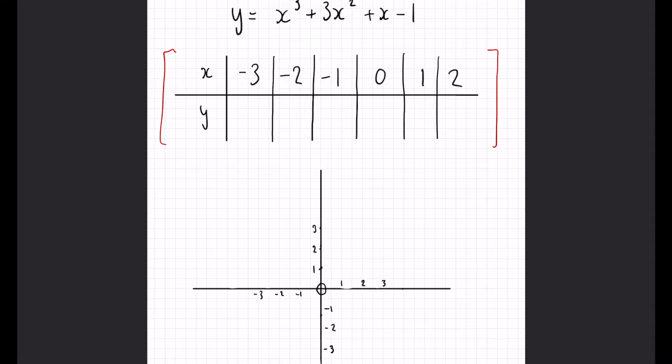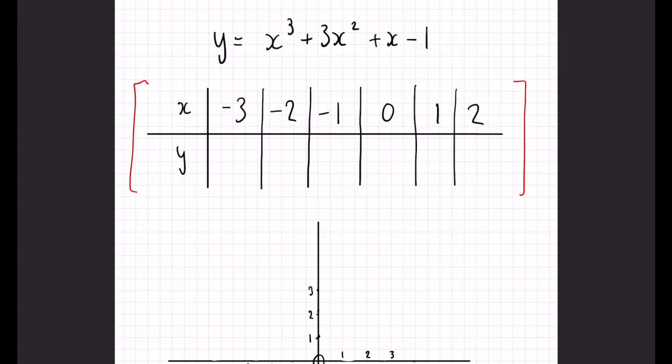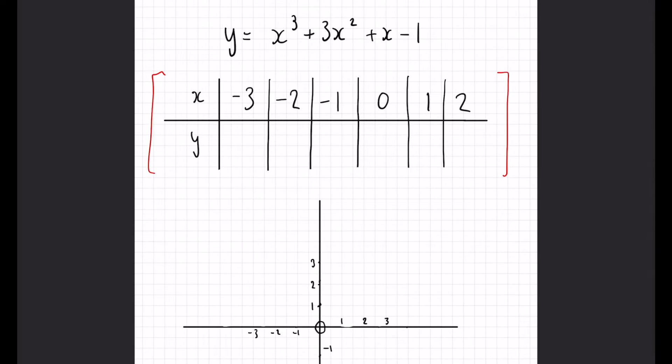So, let's start here. We need to plot the cubic graph, Y equals X cubed plus 3X squared plus X minus 1, between the values of minus 3 and 2. So, I always like to start at the positive end, because no one likes dealing with negatives. Positives are always going to be easier. So, if we take our 2, and we substitute it into all the X values that we have here.